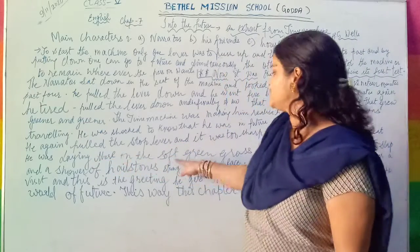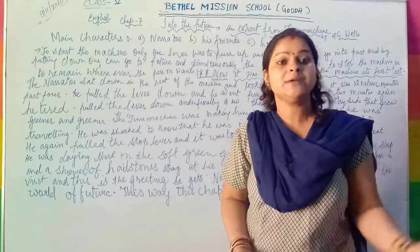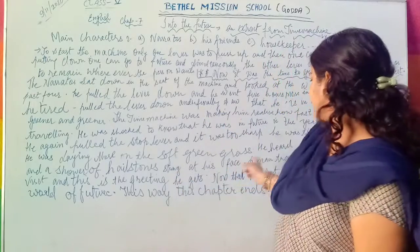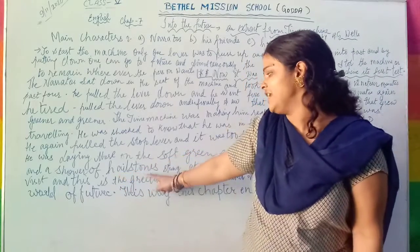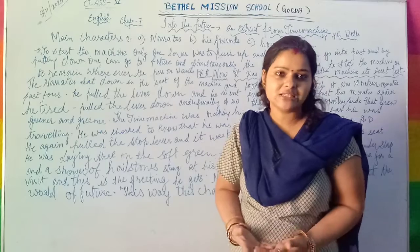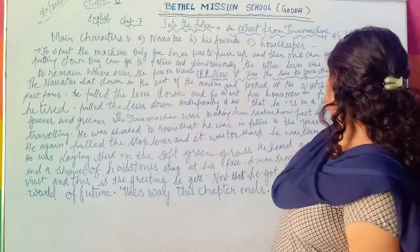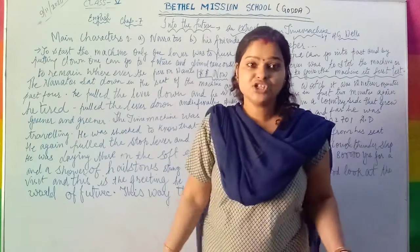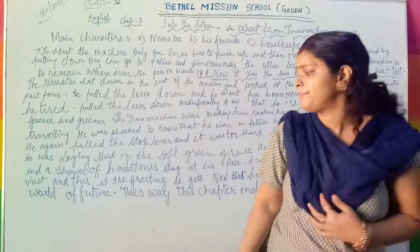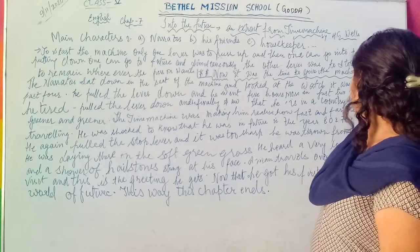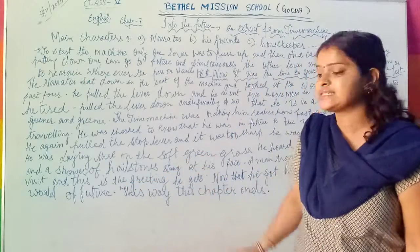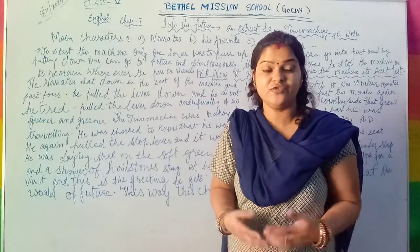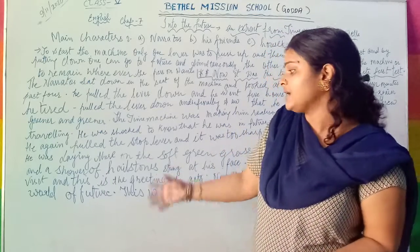He was lying on soft green grass. The place where he reached was full of greenery — a very good and beautiful place. He heard a very loud thunderclap and a shower of hailstones struck at his face. In the future time, when he reached, he also realized that a new man had come in — he was seeing a new person at that particular place.